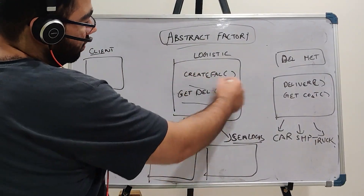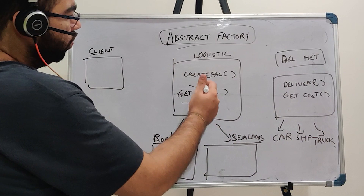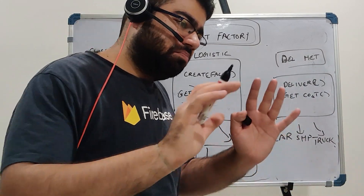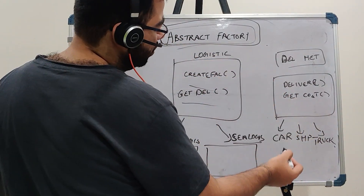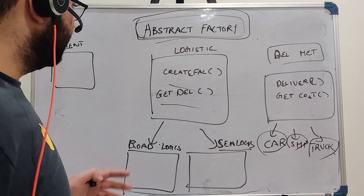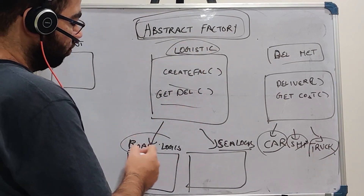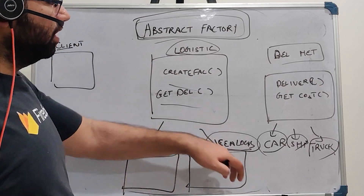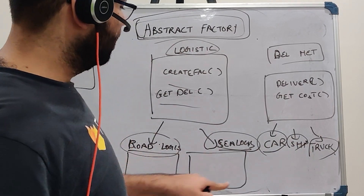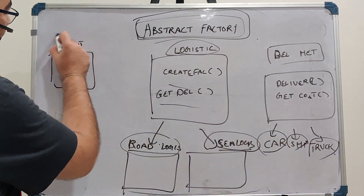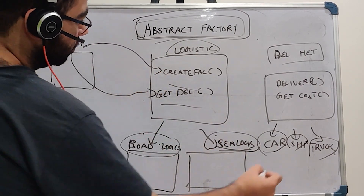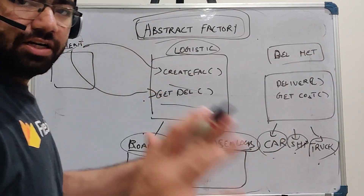This is the diagram we saw in the last video for the factory method pattern. To recap: this is a logistic factory inherited by road logistics and sea logistics. These create objects of the delivery method types — either car or truck for road logistics, or ship or boat for sea logistics. The client calls create factory to get one of these factories and then calls get delivery method to get one of these delivery methods.